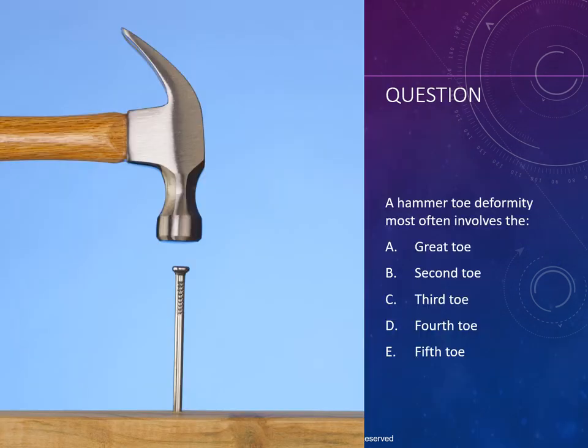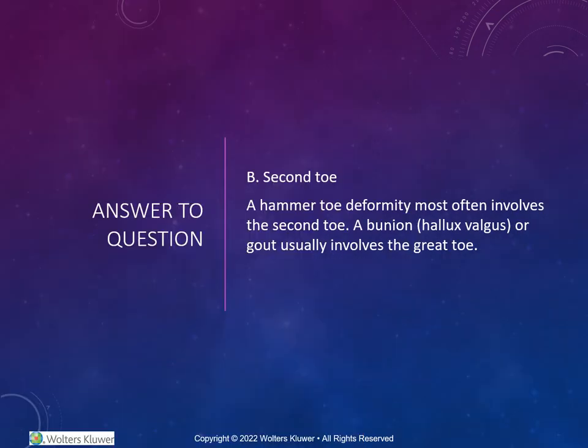This question asks: a hammer toe deformity most often involves which toe? A, great toe; B, second toe; C, third toe; D, fourth toe; or E, fifth toe. The answer is B, second toe.